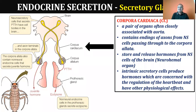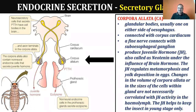Besides storing neuro-hormones from the neuro-secretory cells, the corpora cardiaca epithelial cells are also engaged in secretions. These secretions have a very important role as far as heartbeat management and other physiological processes are concerned. The second gland is the corpora allata.